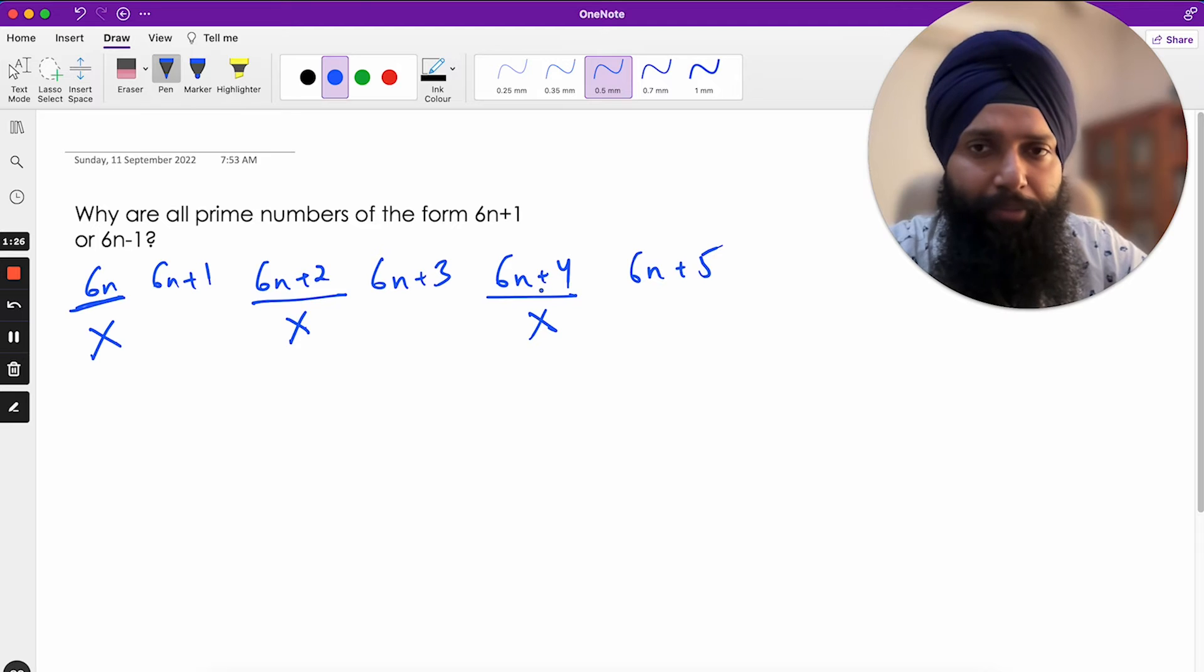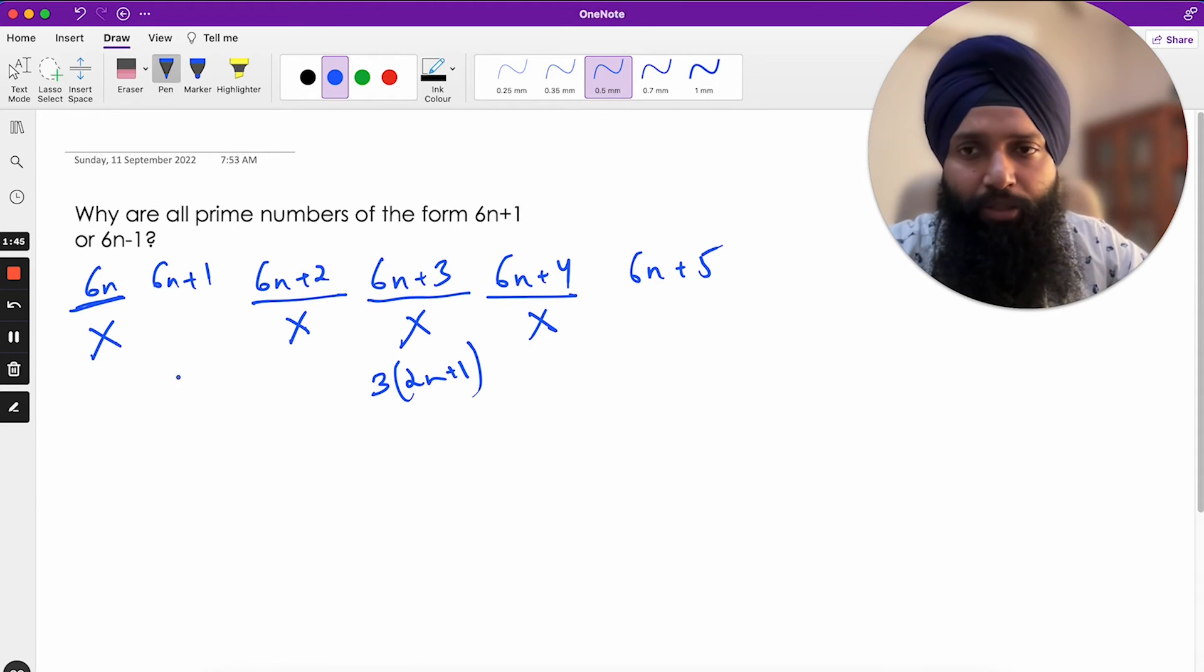Now the only possibilities for prime numbers are these three. If you think about it, this is also not a prime number because it is divisible by 3. You can take 3 common, then you will have 3 times (2n+1). This is not a prime number, we can factorize it.